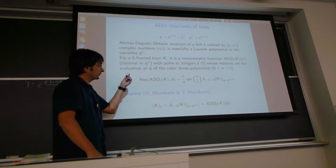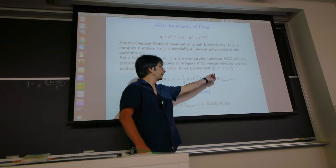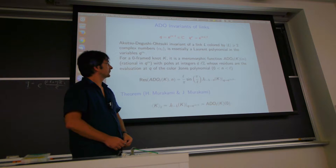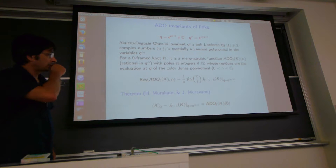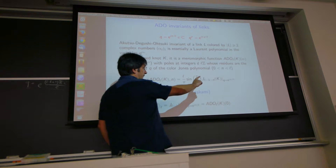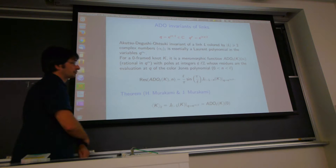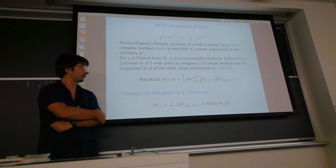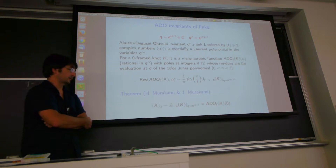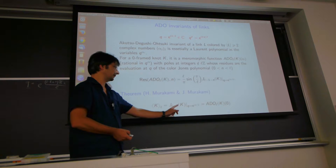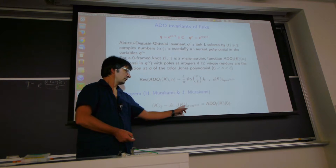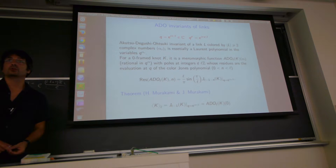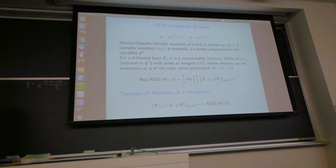This is true for the small colored Jones polynomials between 0 and n, and for the Kashaev invariant, which is the (L-1)-colored Jones polynomial — this is a theorem of Kashaev and Jun Murakami. The Kashaev invariant is the colored Jones polynomial evaluated at the corresponding root of unity, and it's also the value of the ADO invariant evaluated at alpha equal to zero in my convention.